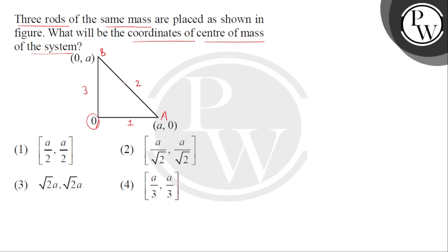So, find karna hai. A system ka center of mass. So, joh hume teen rods given hai. Unka mass same hai. So, let the mass of each rod be M.